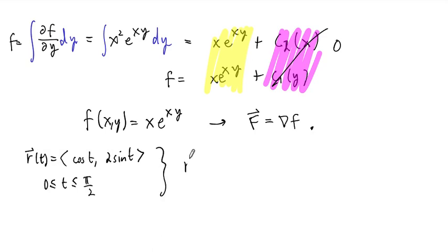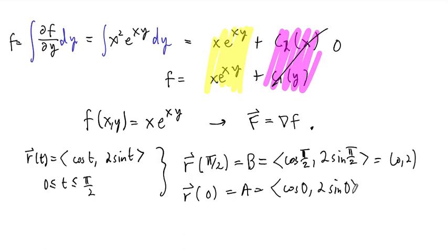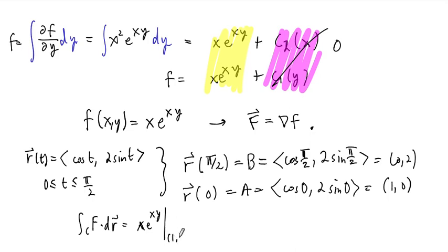We need r(π/2), our endpoint B: that's (cos(π/2), 2·sin(π/2)) = (0, 2). And the starting point r(0), our point A: that's (cos 0, 2·sin 0) = (1, 0). So our integral of F·dr equals x·e^(xy) evaluated from point (1, 0) to point (0, 2). At the upper bound, x = 0, so we get 0. At the lower bound, x = 1 and y = 0, so we get 1. Therefore our integral equals negative 1.